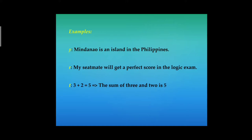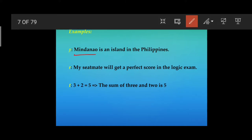In these examples, observe that all the statements convey only one thought. Let's take, for instance, proposition P: Mindanao is an island in the Philippines. The statement has a subject, Mindanao, with a predicate, an island in the Philippines. Take note that the whole statement conveys one thought about the subject — that it is an island in the Philippines.